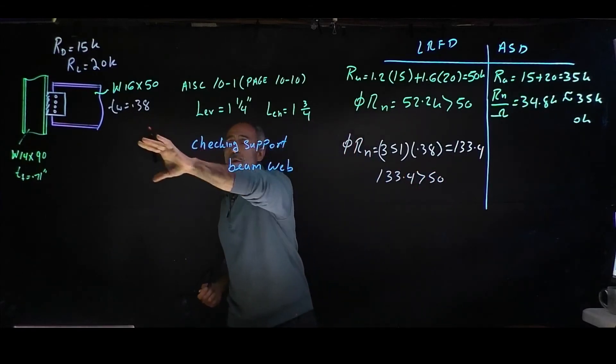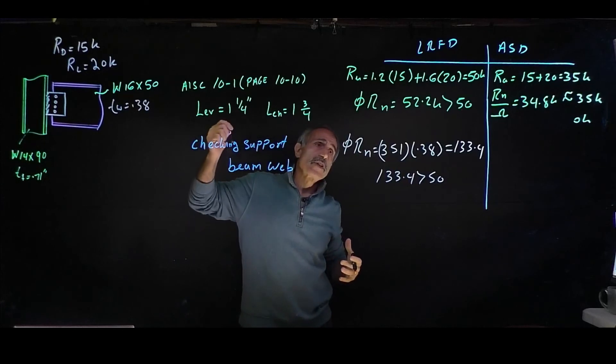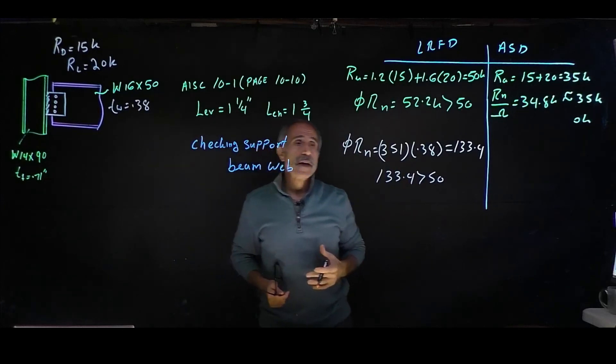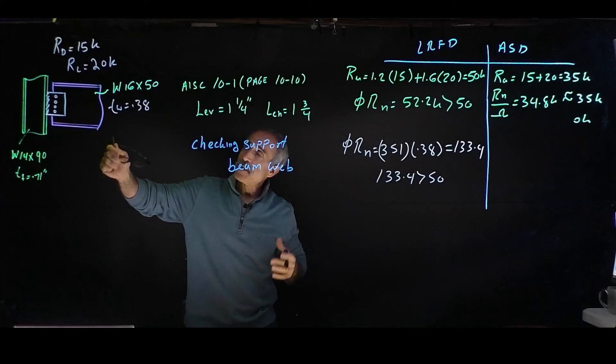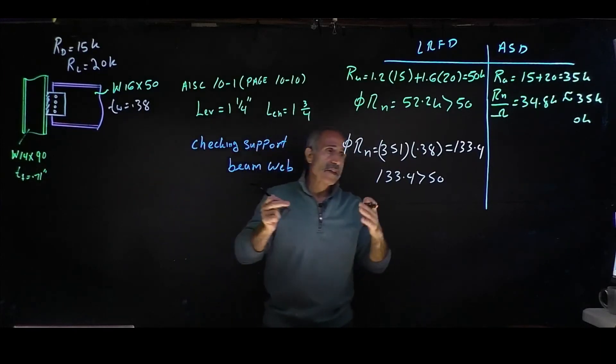So 133.4 is bigger than 50—no issue with the web handling that much shear. But for the plate, because it's smaller and thinner, it's just right at the limit.